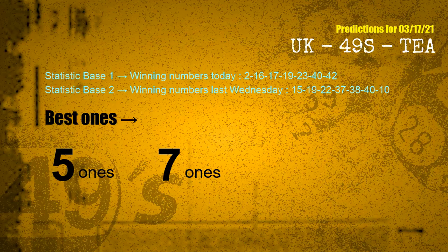According to the statistics above, with winning numbers today — 02, 16, 17, 19, 23, 40, 42 — and winning numbers last Wednesday — 15, 19, 22, 37, 38, 40, 10 — the frequent following ones are 5-ones and 7-ones. Besides following ones, we need more clues for winning numbers of the next draw, so we will find out the most drawn ball color through today's result.